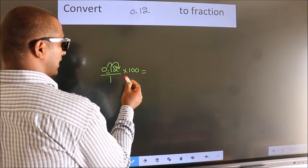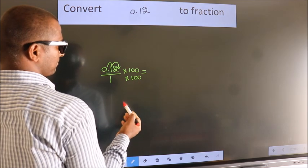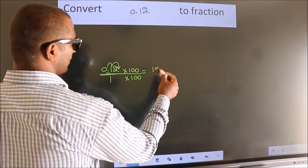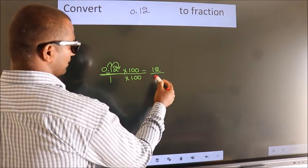Whatever you are multiplying in the numerator, in the denominator also you should multiply by the same. Now, 0.12 into 100, we get 12. In the denominator, 1 into 100, we get 100.